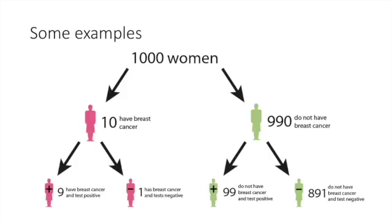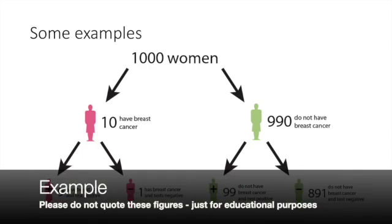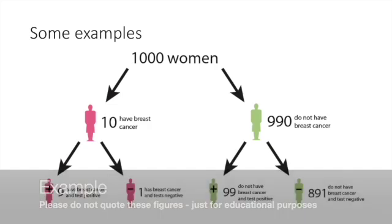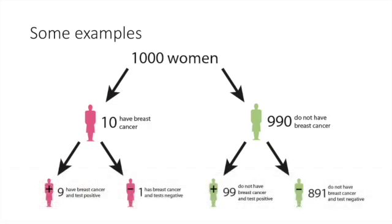We're going to look at an example dealing with breast cancer and breast screening. Similarly, we would have done a CT scan in this group to check for any evidence of breast cancer. So if we take 1,000 women, 10 of whom have confirmed breast cancer and 990 do not — this first line represents those who have already gone through the gold standard testing regime.